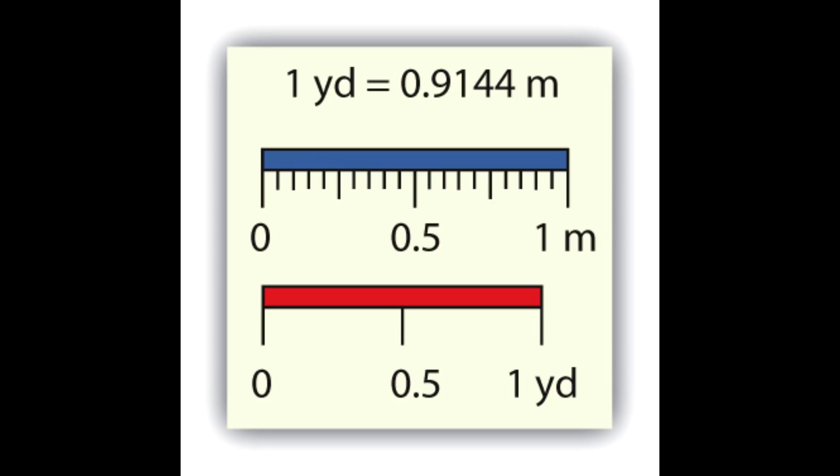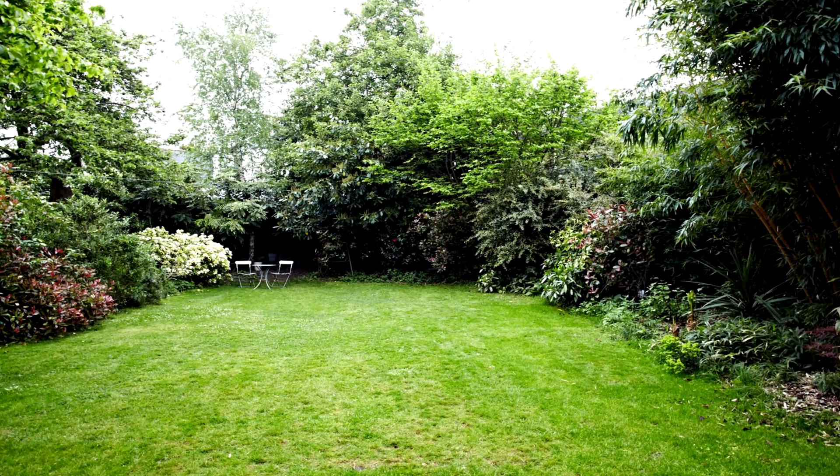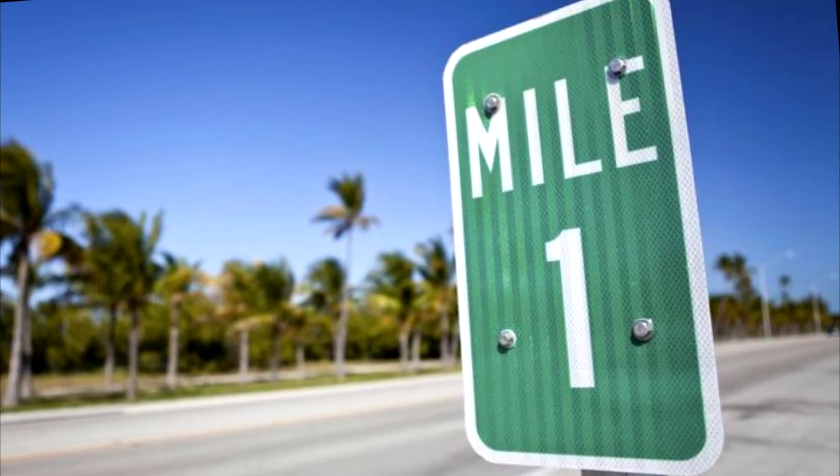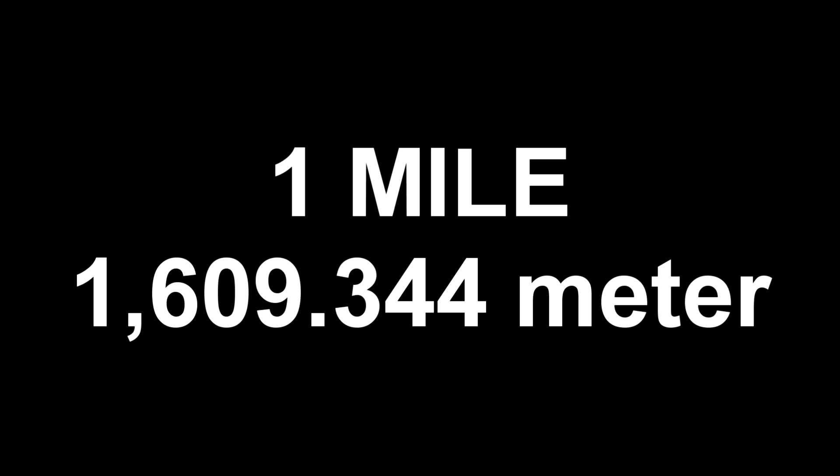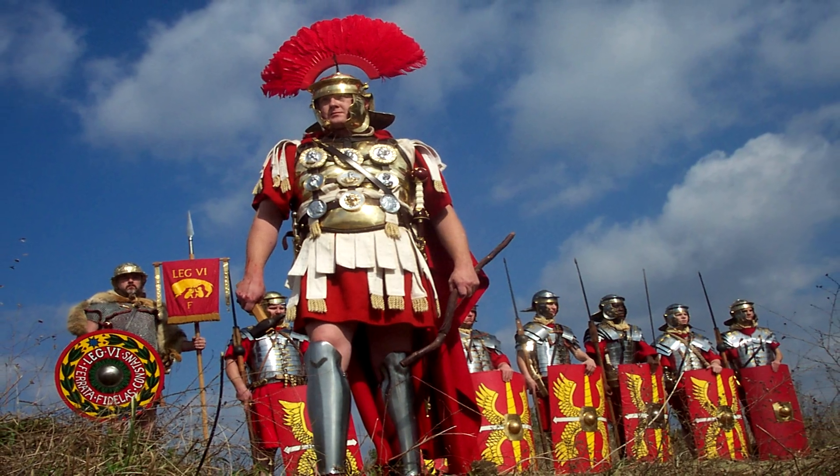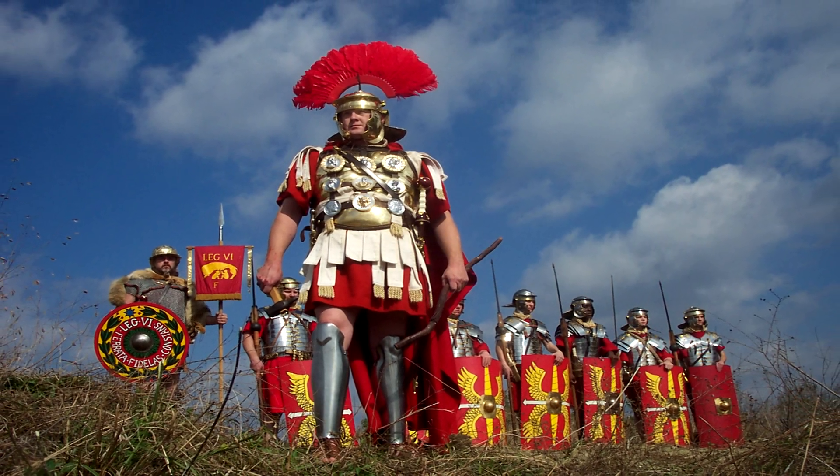Then we have the yard, which is 3 feet and equal to 0.9144 meters. Where the yard originates from isn't even known. Then 1760 yards is 1 mile. The mile equals 1609.344 meters and is dated back all the way to the Roman Empire, where it was defined as a thousand paces as measured by every other step.